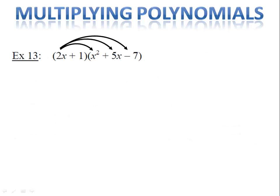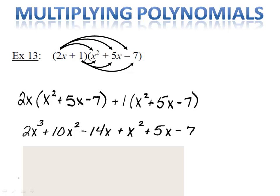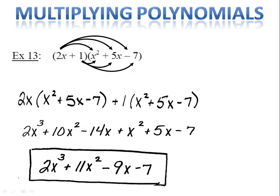What if we have a binomial with two terms and a trinomial with three terms? We're simply using the distributive property two times. We begin by distributing the 2x into x squared plus 5x minus 7. Then we need to distribute the 1, so we have 1 times x squared plus 5x minus 7. Now I can do my distributing, combine like terms, and I have my answer.